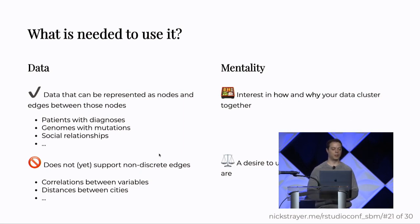So with any package or any kind of method research product, you need to know what you need to do to use it. In this package, you need really two classes of things. One is data. You need data that can be represented as nodes and edges between those nodes, also known as graph data. One of the examples that we use it for is patients with diagnoses. So you have a patient as a node, and they're connected to diagnoses as another node. Another example is genotypes for people. A more classic example is social relationships and networks. We don't currently support non-discrete edges. That's just because the distribution that we're using is the Poisson distribution, which is a discrete distribution. There are ways to extend it to non-discrete edges, but we have not gotten there yet. Those would be examples like correlation networks.